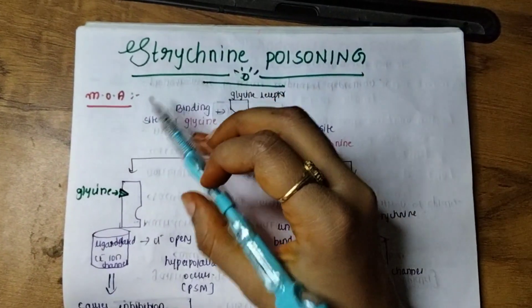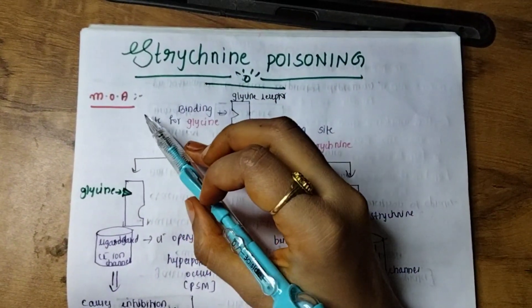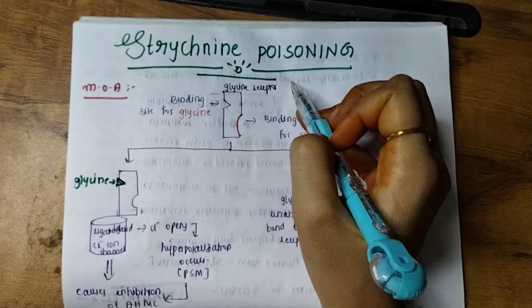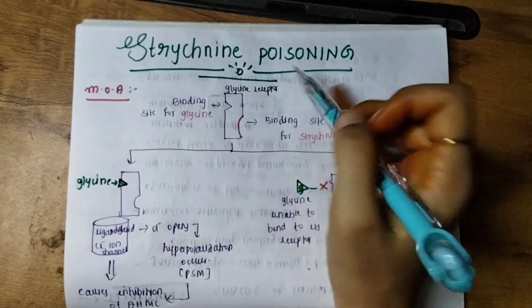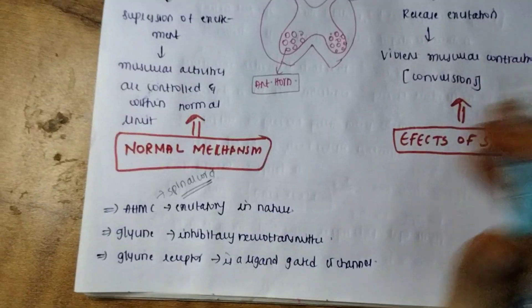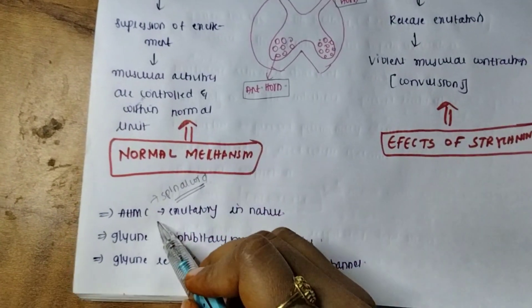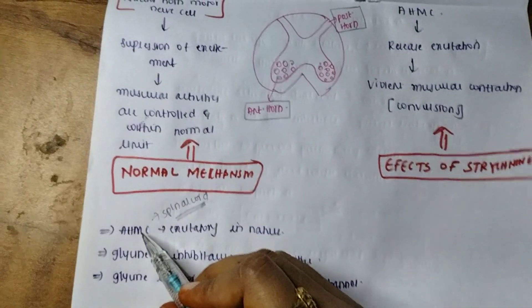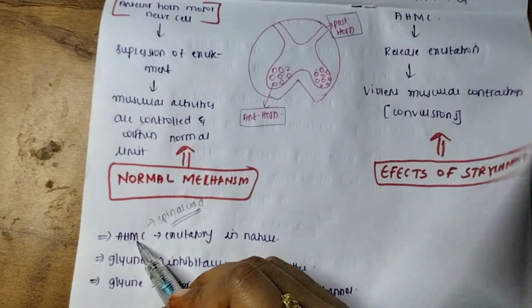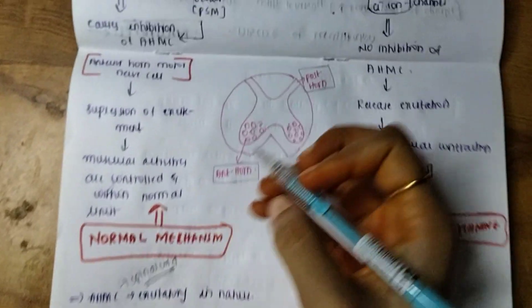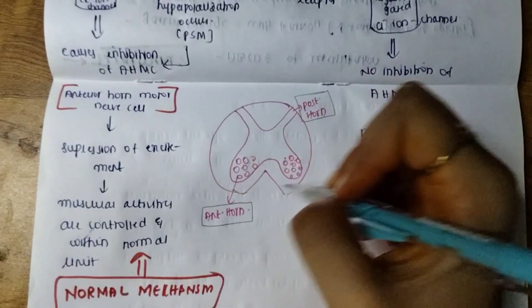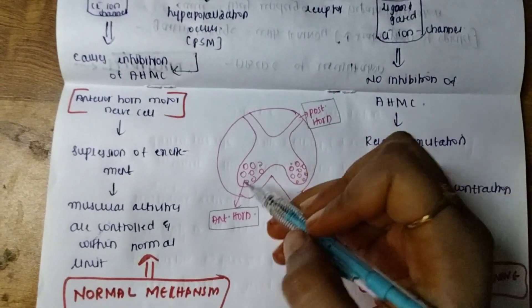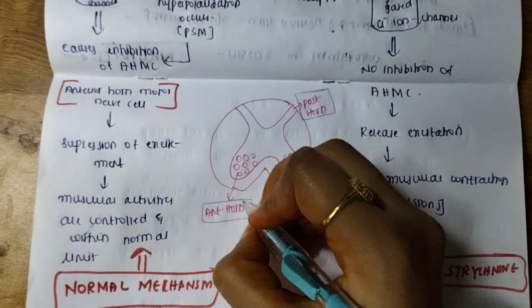Hello guys, today you are going to learn about the mechanism of action of strychnine poisoning. Before learning that, I would like to tell you a few things. AHMC means anterior horn motor cell. This anterior horn motor cell is present in the spinal cord — if you cut it, you are going to see the posterior horn and the anterior horn.